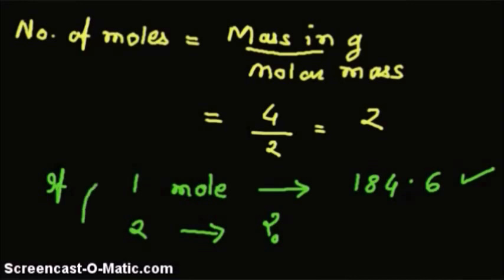So, simple arithmetic. Bring 2 in the numerator, 1 into the denominator and multiply by 184.6 and we get the answer.